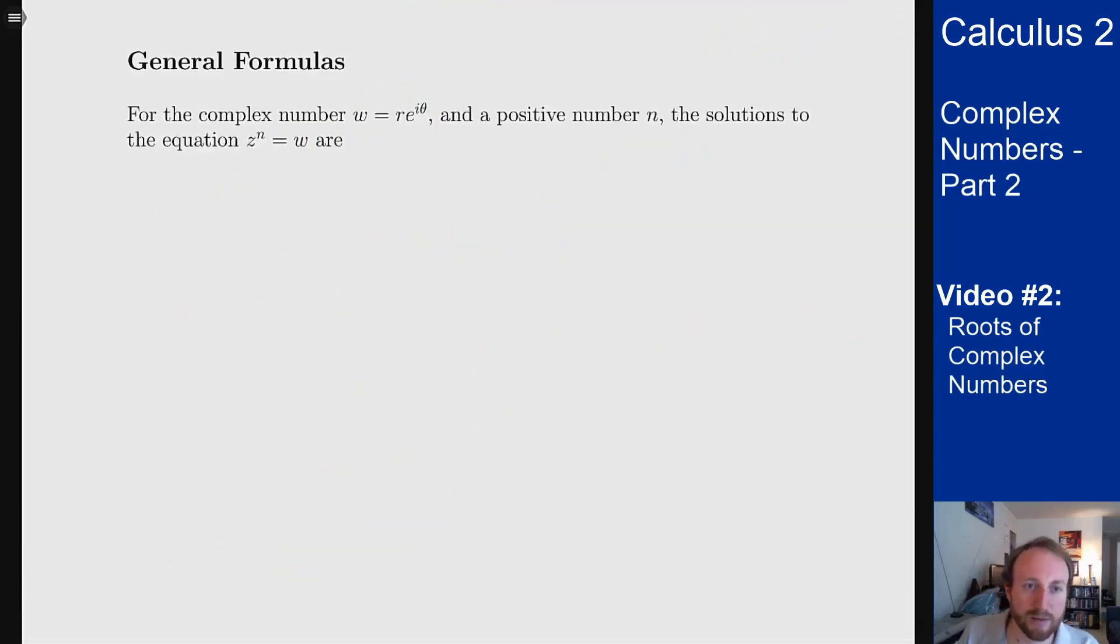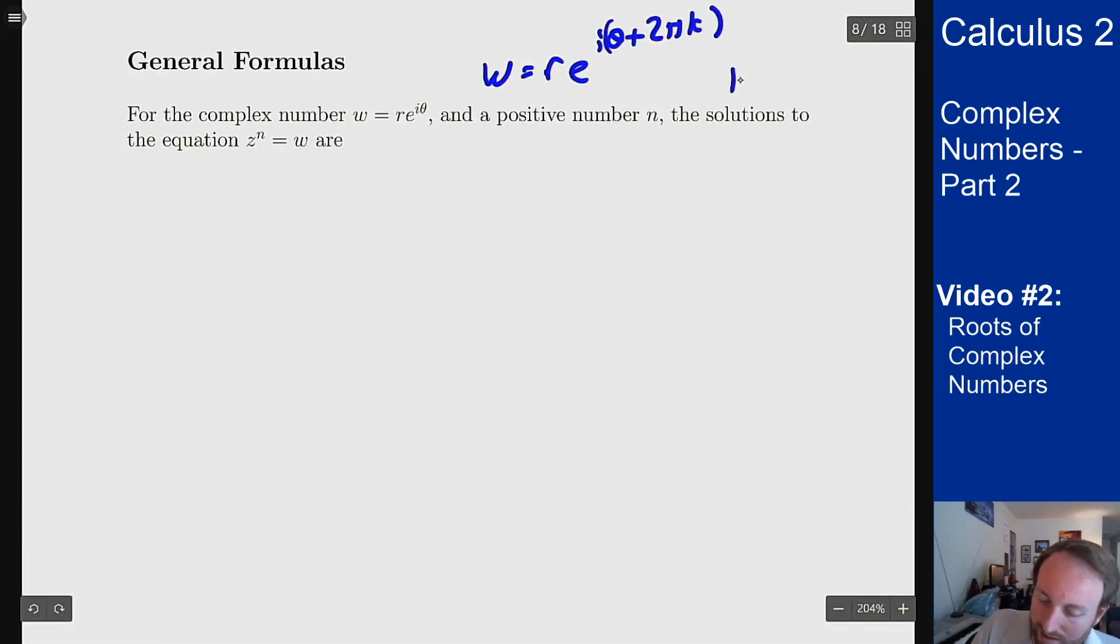So general formulas for the complex number w is r e to the i theta and a positive number n, the solutions to the equation z to the n equals w are the ones we were talking about before. We're going to rewrite w basically as r e to the i theta plus 2 pi k, take k from 0 up to n minus 1 and that will give us our n solutions we want. So I will get